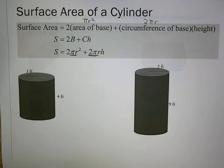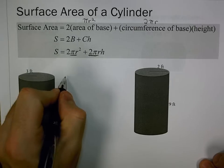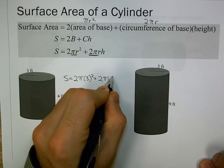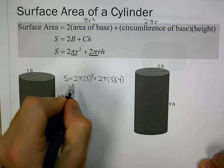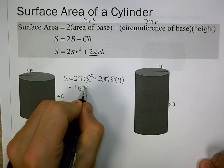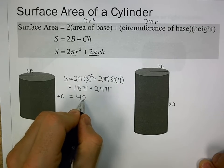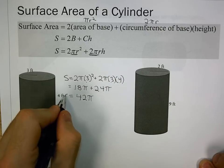This is nice because it gives us a general form we can easily use. For a prism, it depends on the base shape, but for a cylinder, if we can identify the radius and height, we just plug them in. With radius 3 and height 4, we get 2π times 9 plus 2π times 3 times 4, which is 18π plus 24π, giving 42π feet squared.